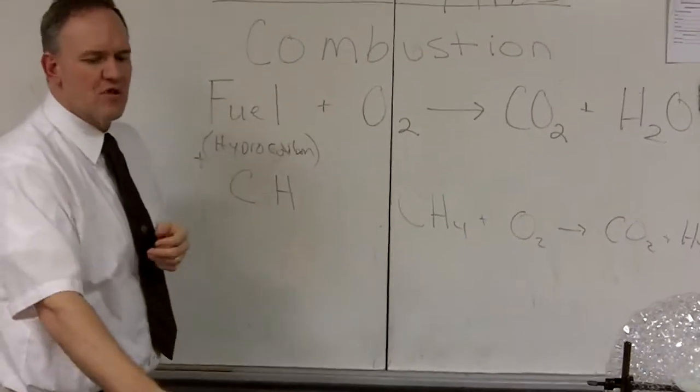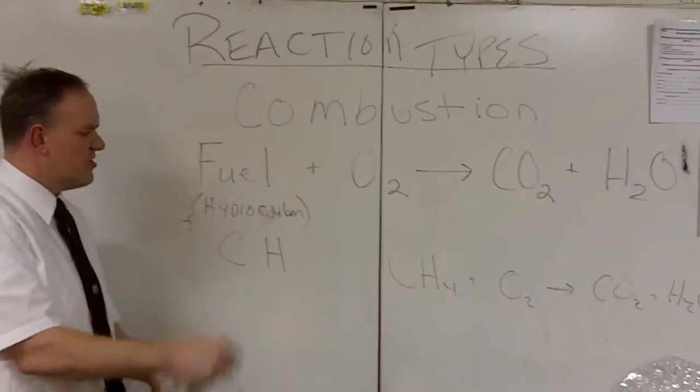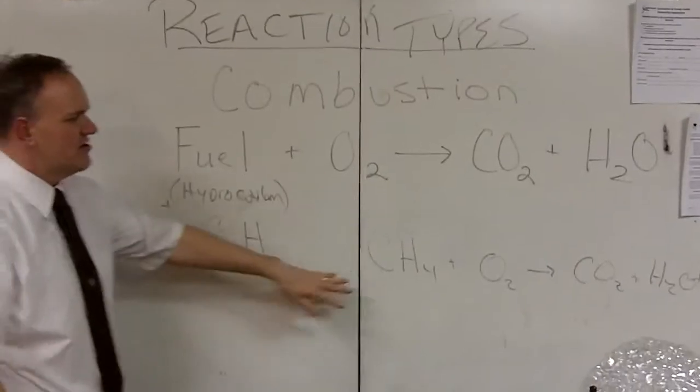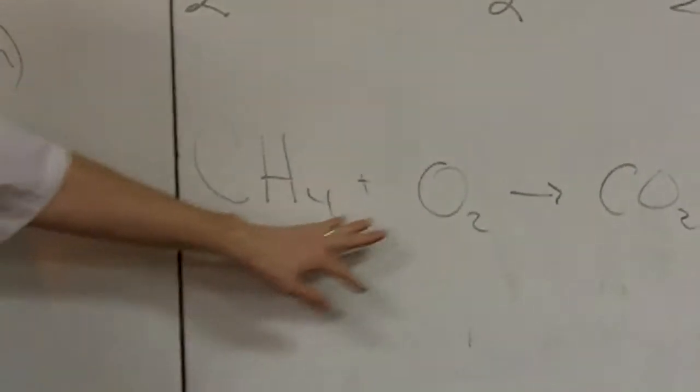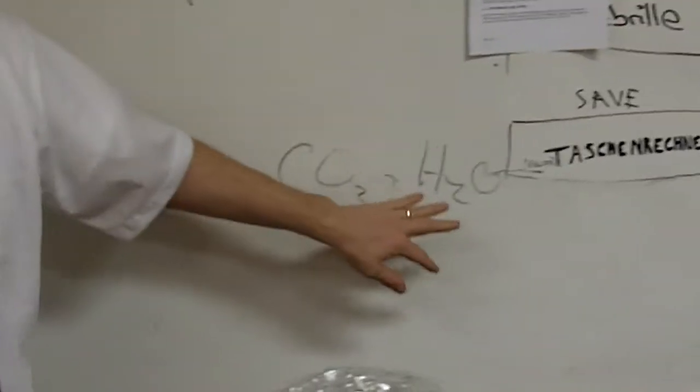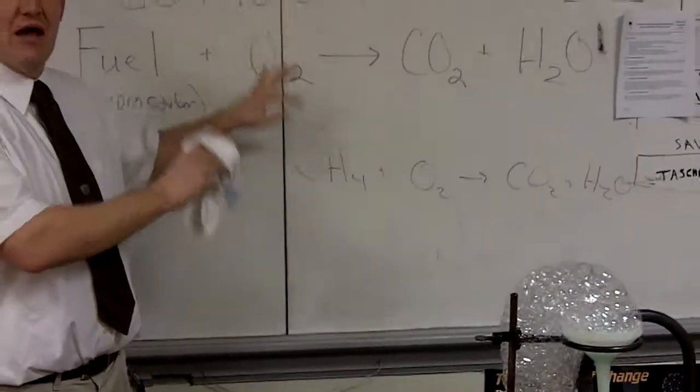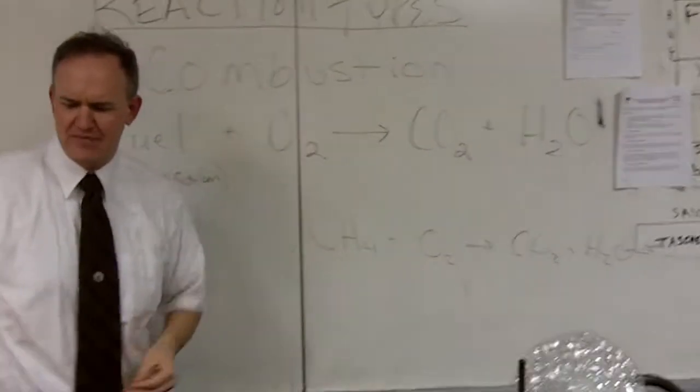On all of your example problems, the homework, the tests, it'll always be some simple hydrocarbon, C with some H. In our example that we're going to do, CH4, that's methane. Methane plus oxygen makes carbon dioxide and water. Again, we are not worrying about balancing right now. We're just more focused on the types.